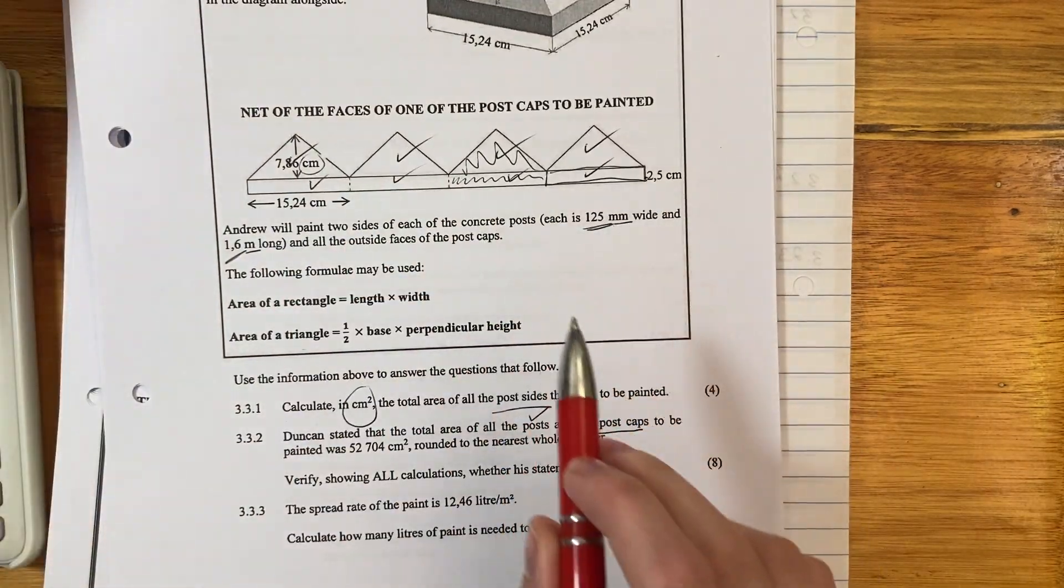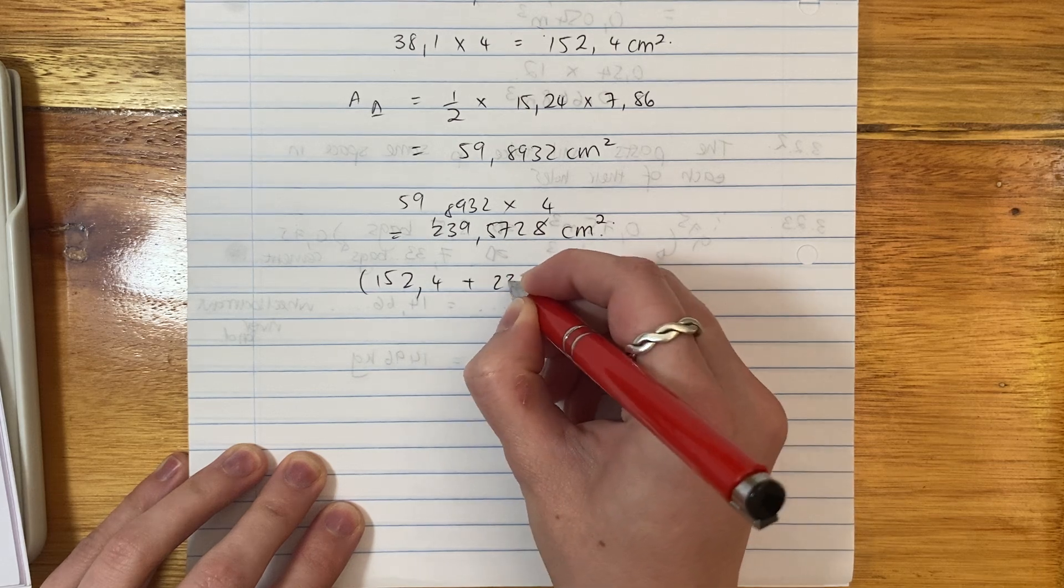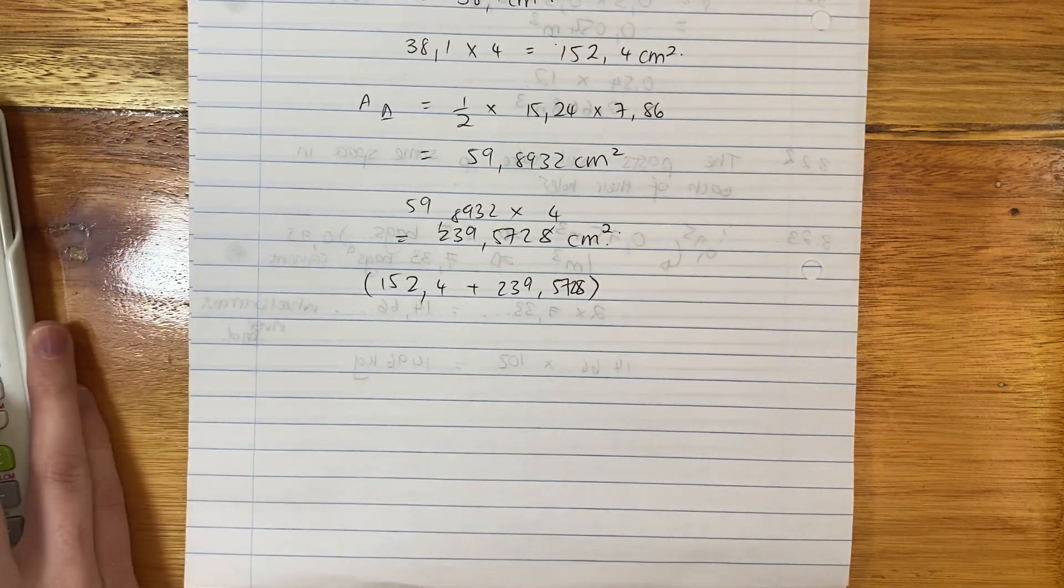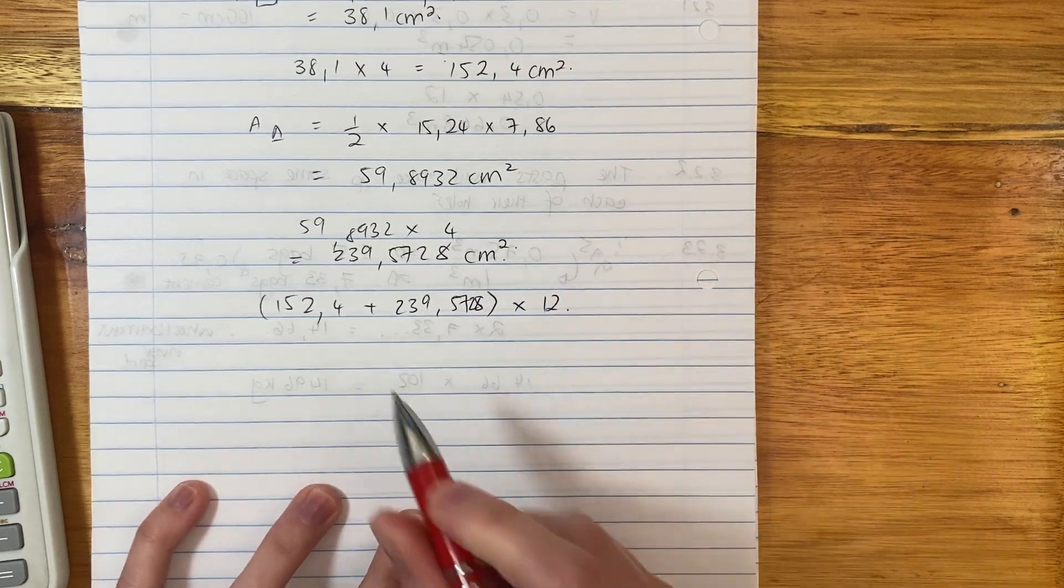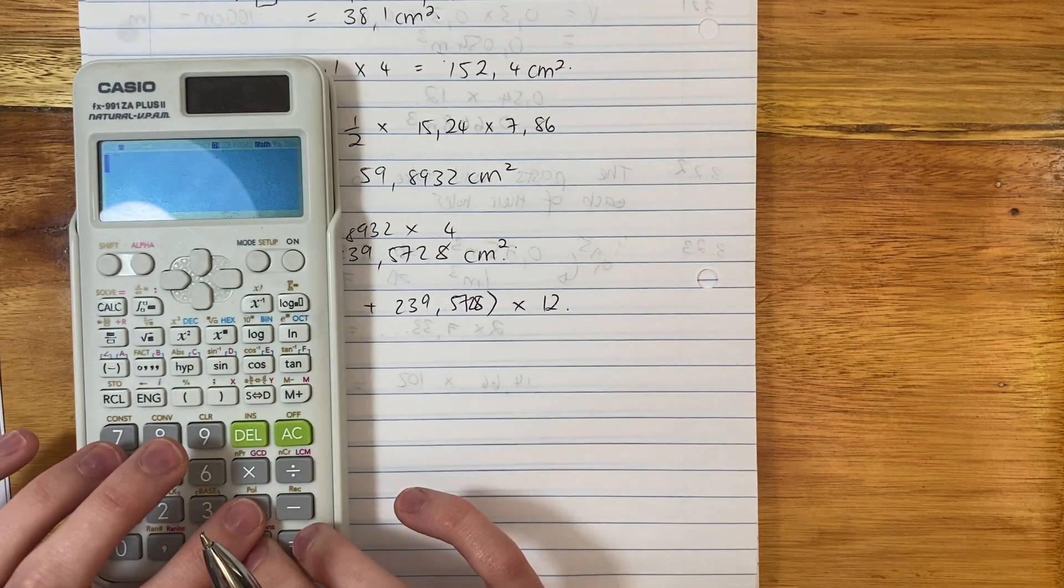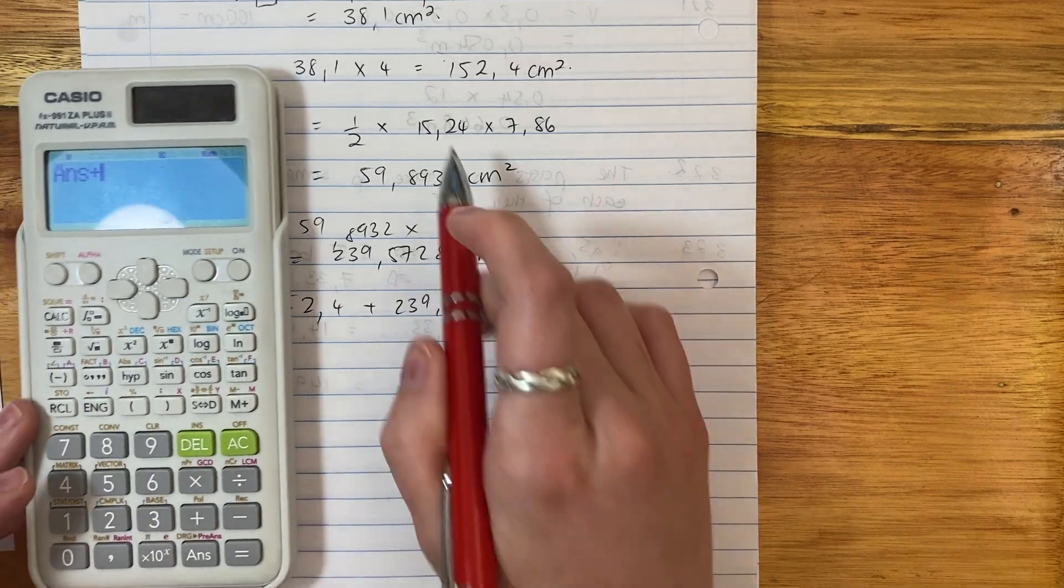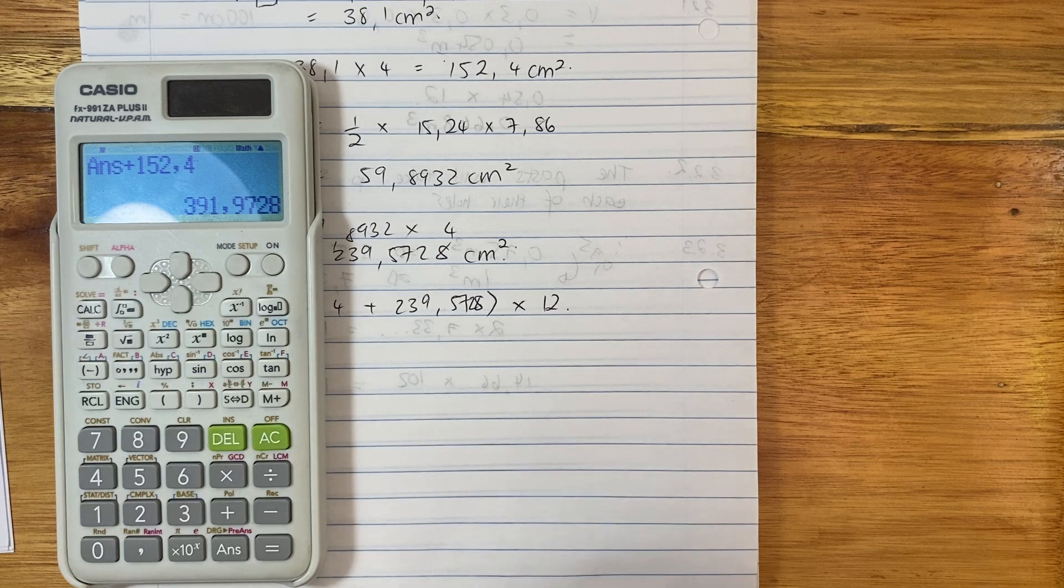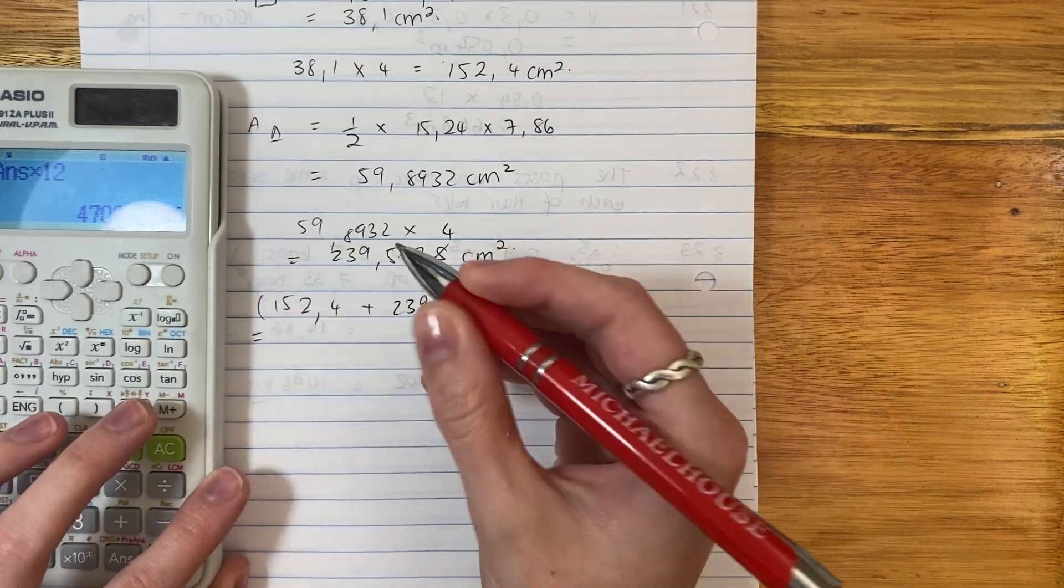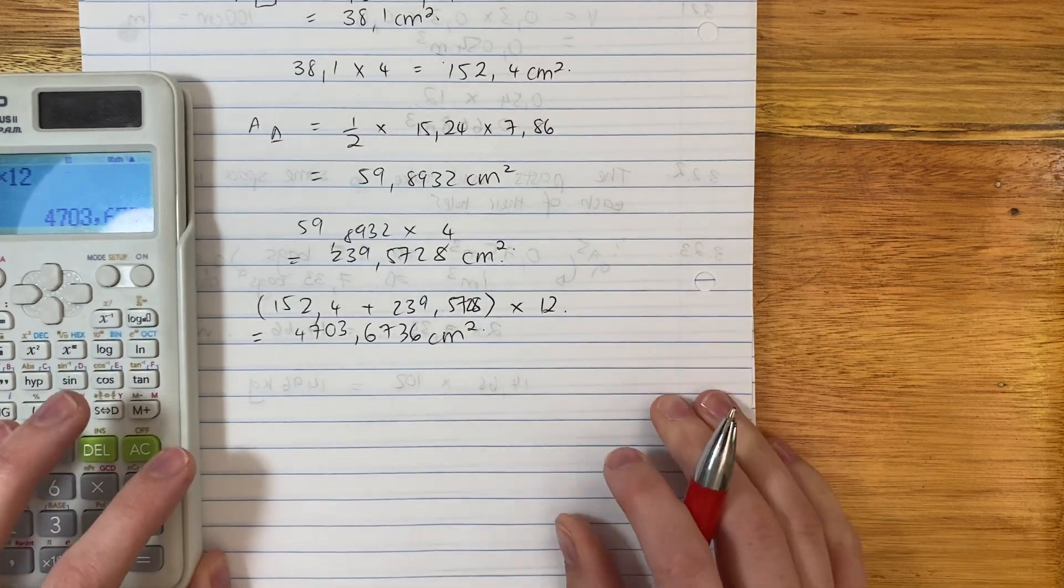So now these are my triangles on my cap. Those are my rectangles on my cap. And if we look at my rectangles plus my triangles, they make up my whole cap. So I have to add them together. So I'm going to say 152.4 plus 239.5728. That's the surface area of one cap. But how many caps are there in total? There's 12. So we have to times it by 12. We add those together, say that's one, and then we have to times all of that by 12. Make sure that you are writing this in correctly. So we're going to say 239.5728 plus 152.4, that gives me the surface area of one cap, but I have to times it by 12. So my total area there is going to be 4703.6736 centimeters squared. So that's of all my caps.